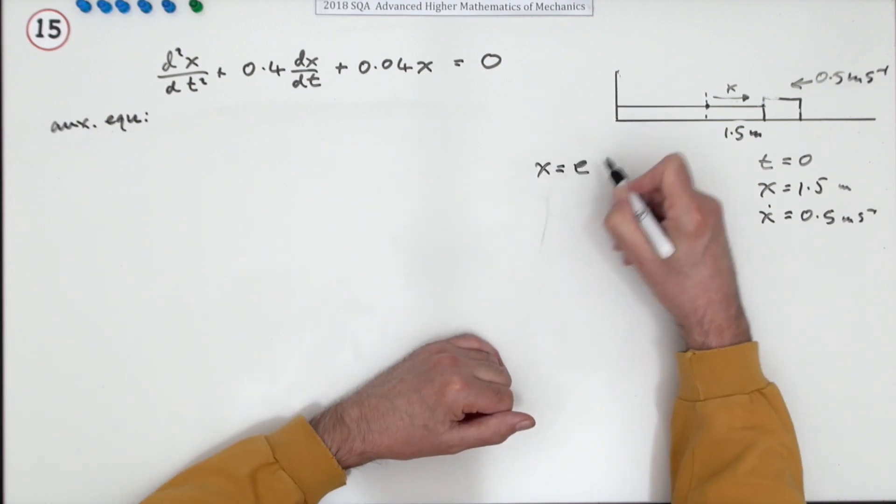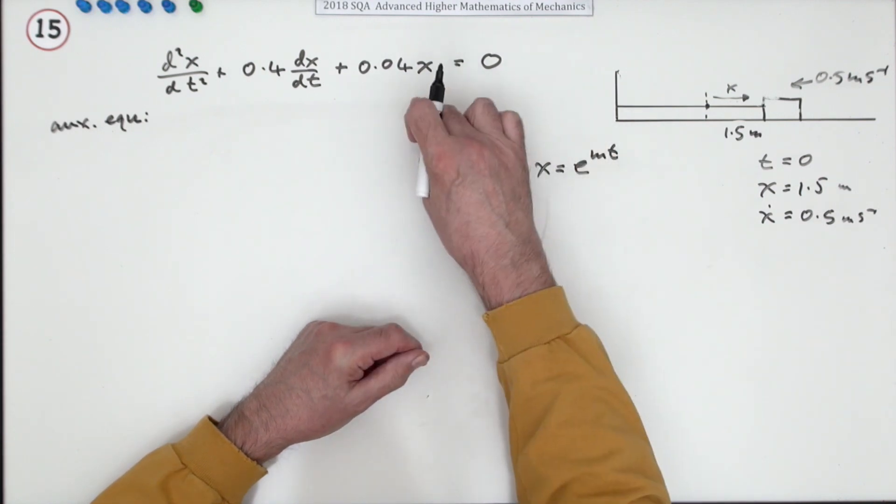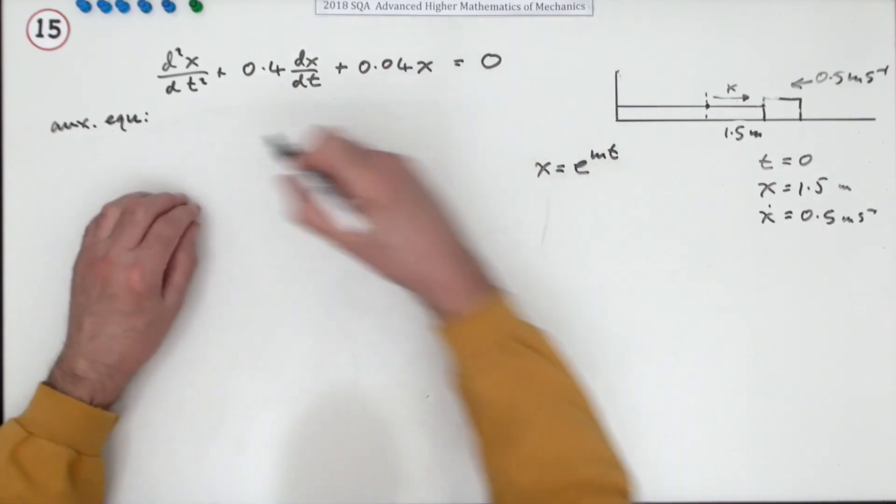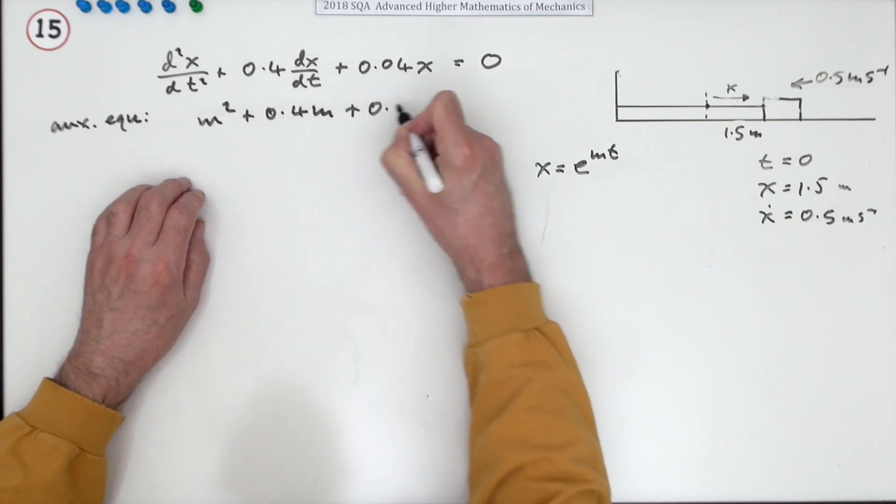And if you popped it into there and cancelled out the e to the mts, you'd end up with this: m squared plus 0.4m plus 0.04 equals zero.